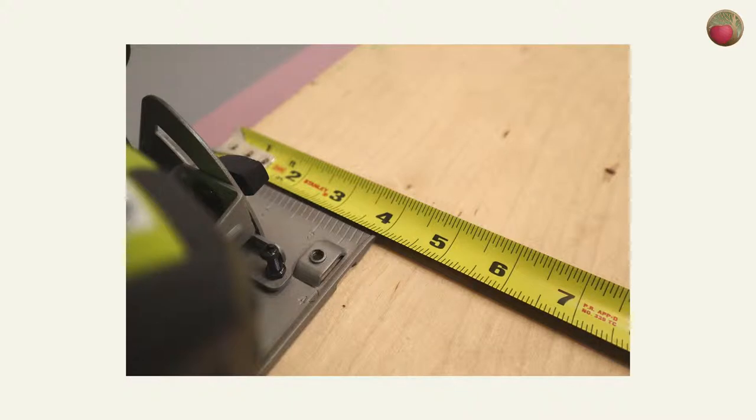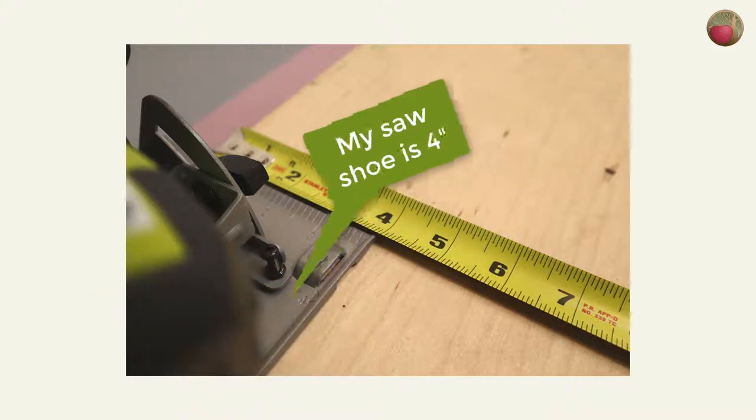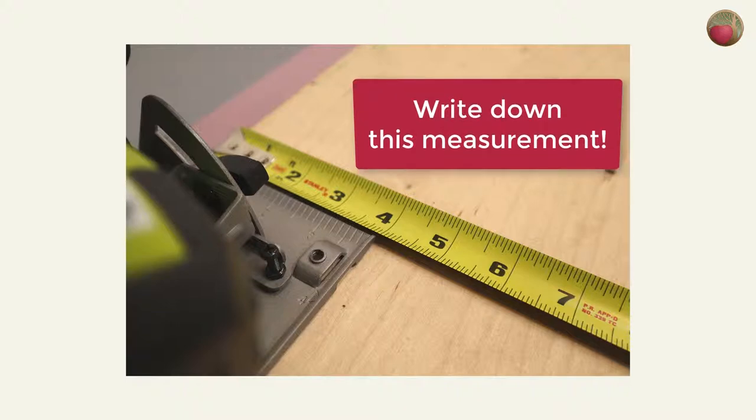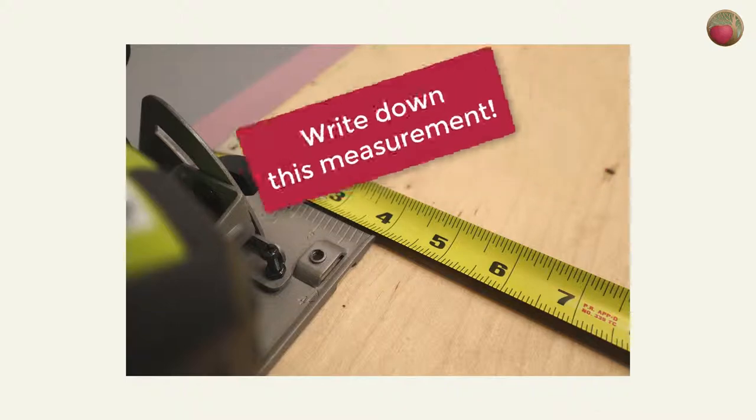Measure along the top of the shoe from the edge of the plywood to the outer edge of the shoe. You can see mine is four inches. Write down this measurement. You'll need it later and all other measurements of the straight edge will be in reference to it.